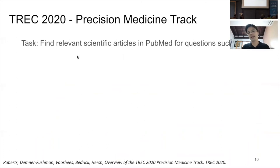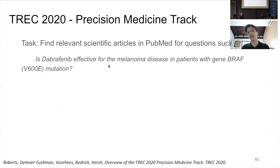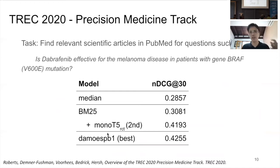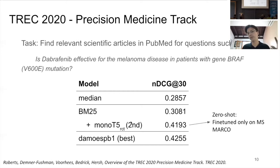We also participated in the TREC 2020 Precision Medicine track. The task was again to find scientific articles in PubMed to identify what treatments are effective for certain types of diseases with specific gene mutations — quite complex questions. We got second place, losing to Alibaba by a small margin. Their model was an ensemble of BERT-based models fine-tuned for the task, whereas our model was only fine-tuned on MS MARCO.